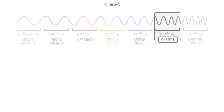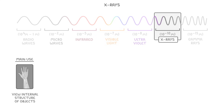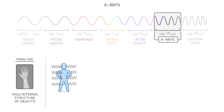If we start with X-rays, their main use is to help us view the internal structure of objects, including our own bodies. The typical X-ray machine, like you get in a hospital, works by firing X-rays through a person's body and recording the ones that get through using a detector plate.